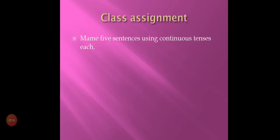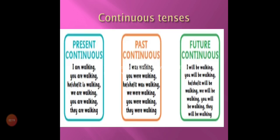You have to make five sentences using each continuous tense — five sentences of present continuous tense, five of past continuous tense, and five of future continuous tense.